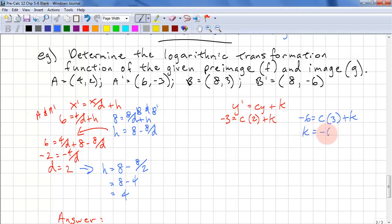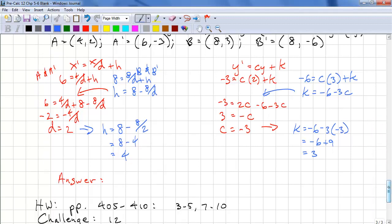We substitute it in. We have negative 3 equals 2c minus 6 minus 3c. We move the negative 6 over. We get 3 equals negative c. Therefore, c equals negative 3. We substitute back. k equals negative 6 minus 3 times negative 3. Therefore, k equals negative 6 plus 9, and k equals 3. So we solved all four coefficients.